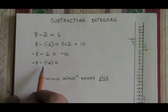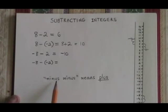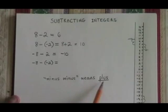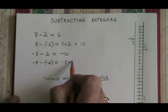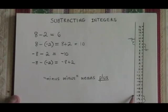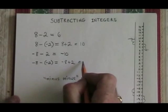And the fourth one, negative 8 minus negative 2. It has negative signs all over the place, but we apply our rule. Minus minus means plus. This can be written as negative 8 plus 2. And on our thermometer, from negative 8, we go up by 2, and our answer is negative 6.